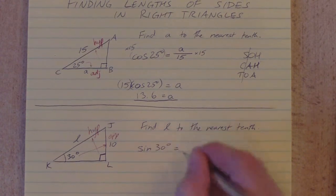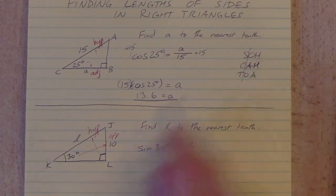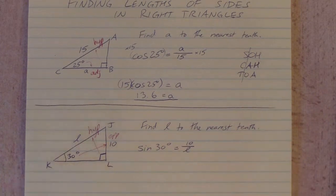The sine of my angle is the length of the opposite, 10, divided by the length of the hypotenuse, little L. All right.